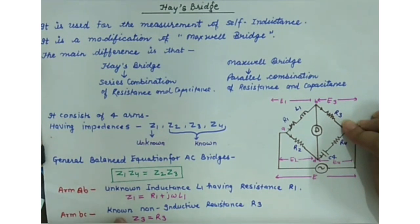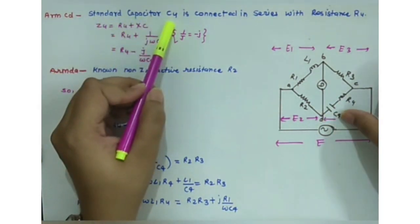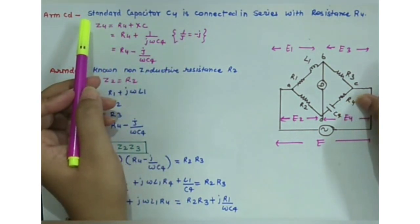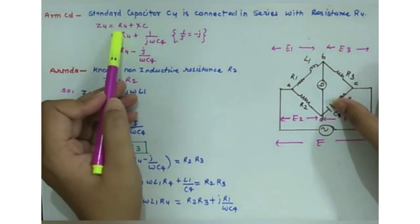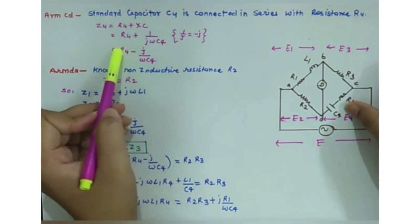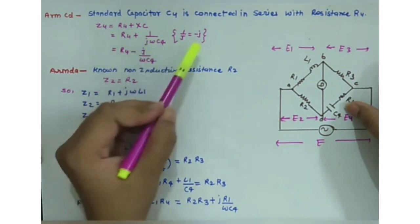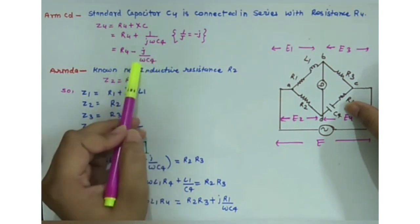Arm BC has a non-inductive resistance R3, so the value of impedance Z3 = R3. Over arm CD, a standard capacitor C4 is connected in series with resistance R4. The reactance of capacitance is 1/(jωC4), and since 1/j = −j, Z4 = R4 − j/(ωC4).